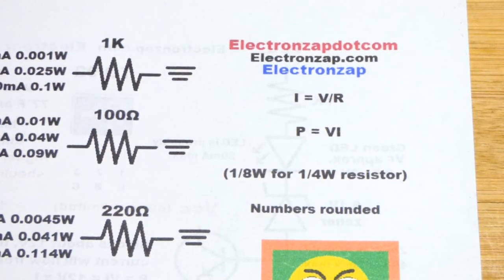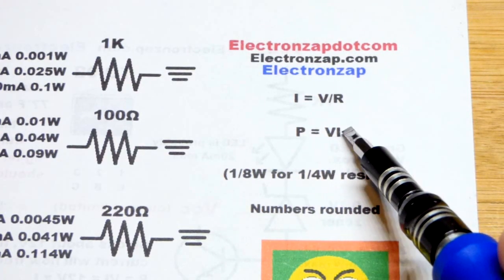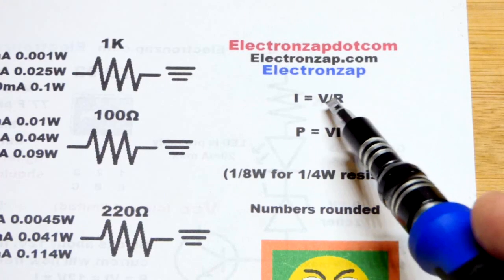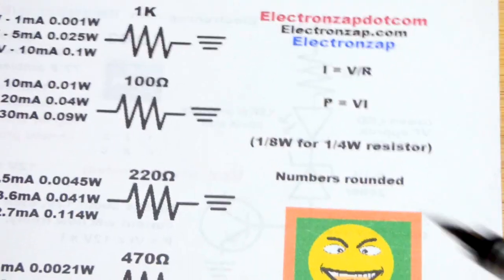While doing so though they heat up, so you have to be aware of that. So that's the voltage across them times the current going through them. So first you calculate this, then you can calculate that to get the wattage.